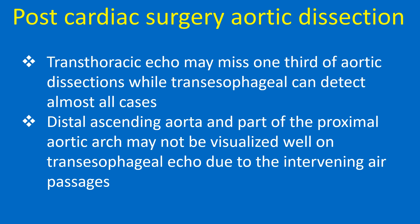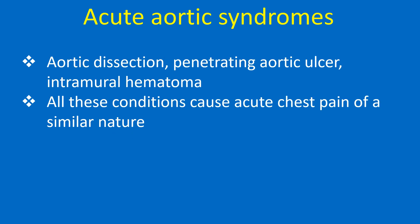The distal ascending aorta and part of the proximal aortic arch may not be visualized well on transesophageal echo due to the intervening air passages. Acute aortic syndromes include: aortic dissection, penetrating aortic ulcer, and intramural hematoma. All these conditions cause acute chest pain of a similar nature.